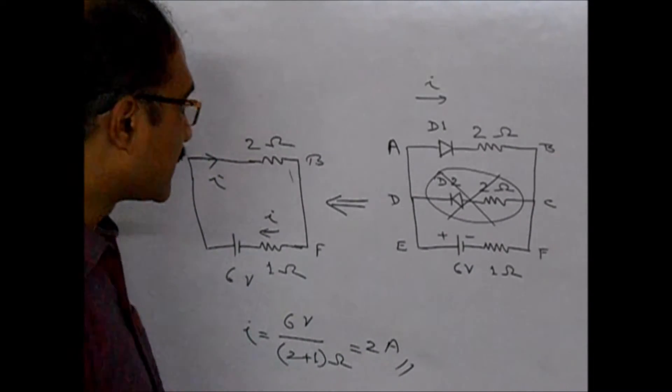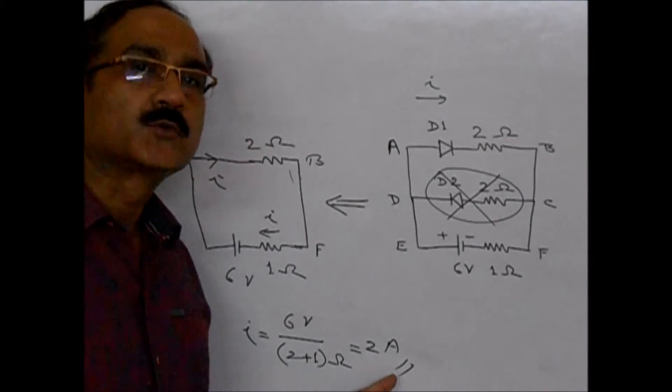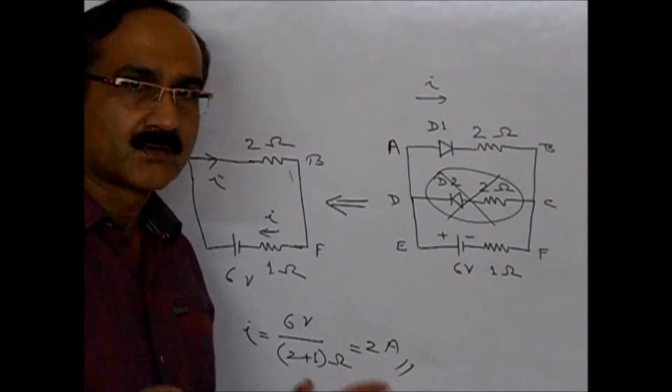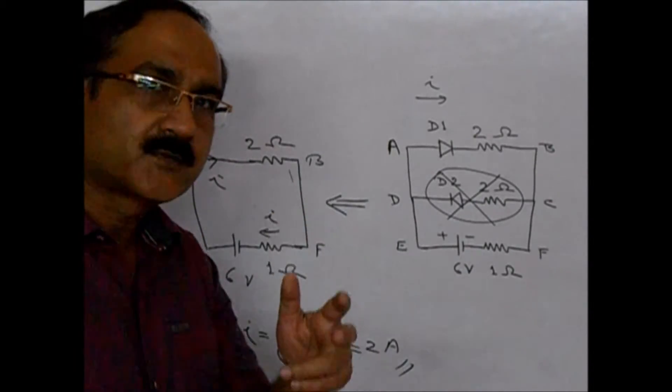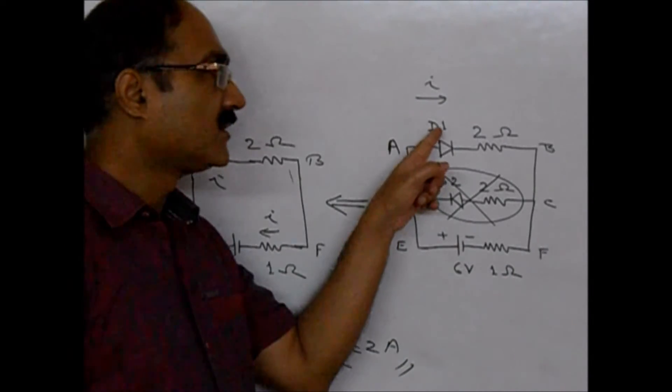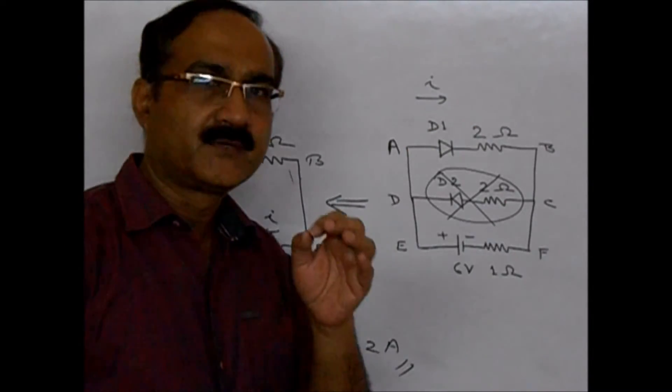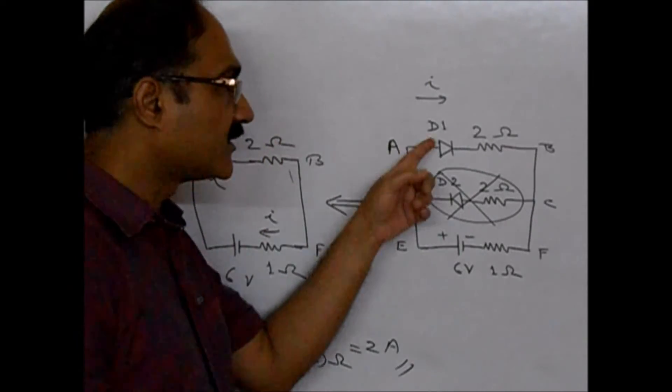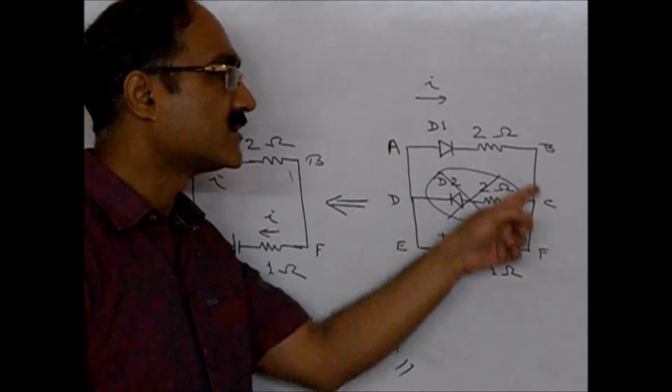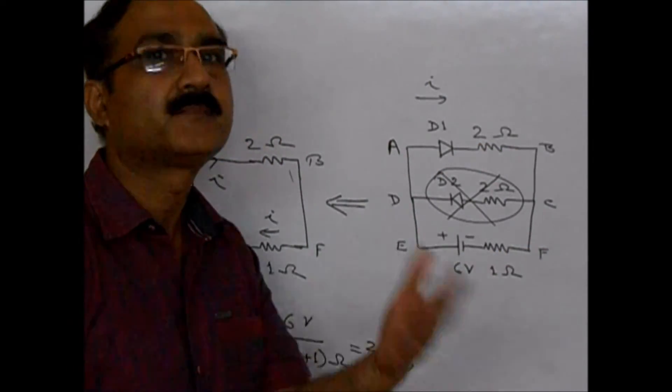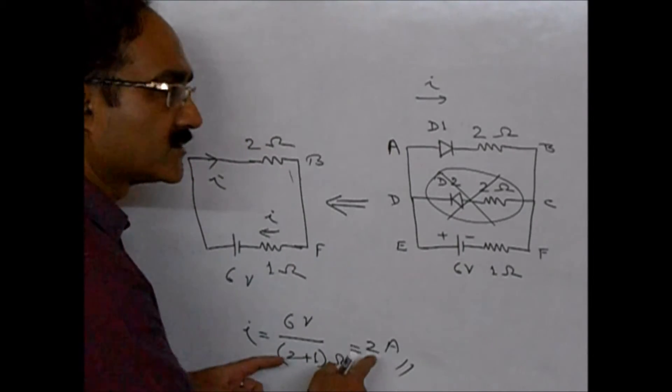So the current answer to this problem is 2-ampere. So this problem is a combination of diodes and resistors. We have to utilize the concepts of semiconductor devices and resistances connected in series and parallel to get the answer.